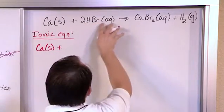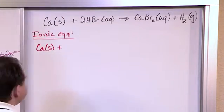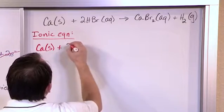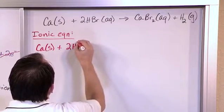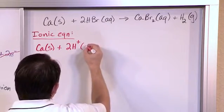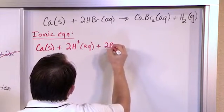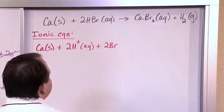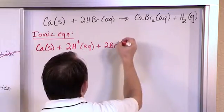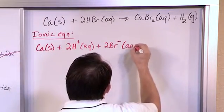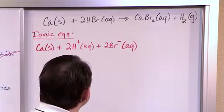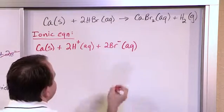Okay, but this HBr, this is an aqueous solution, and there's a 2 in front, so I need to carry that. Hydrogen always wants to have a plus charge, so I'll put this in aqueous solution. This 2 applies to the Br, to the bromine, and bromine, if you look at the periodic table, it's always going to want to have a negative charge like this. So that's on the left-hand side of the equal sign.